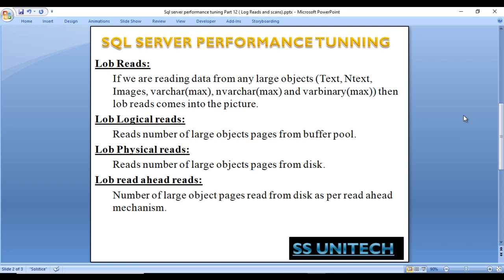Here we have three types of LOB reads. As we have discussed, we had logical read, physical read, and read-ahead read. So here we have large object logical read, large object physical read, and large object read-ahead read. In case of LOB logical read, it reads the number of large object pages from the buffer pool. In case of physical read, it reads the number of large object pages from the disk. And in case of read-ahead read, the number of large object pages are read from the disk as per the read-ahead read mechanism, as we discussed in the last video. Let's have a look in practice.